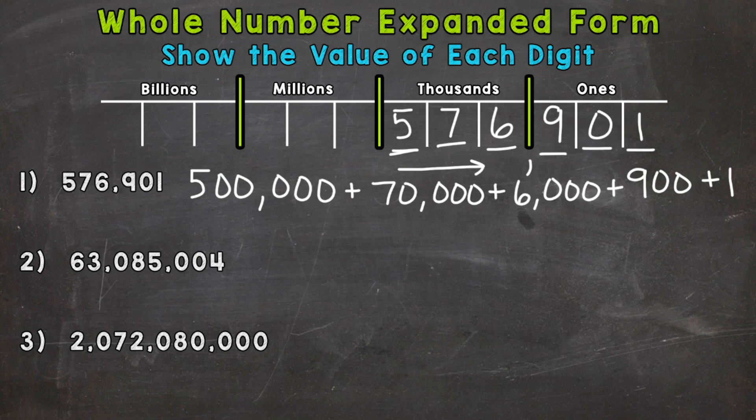So on to number two here, where we have 63,085,004. We need to start with the greatest valued digit. So the furthest to the left, and it's the six. So it's in the 10,000,000 place. So it has a value of 60,000,000. Now with some of these larger numbers in value, you have to be very careful with your zeros. So for example, I would be incorrect there because that's only 60,000. We need three more zeros.